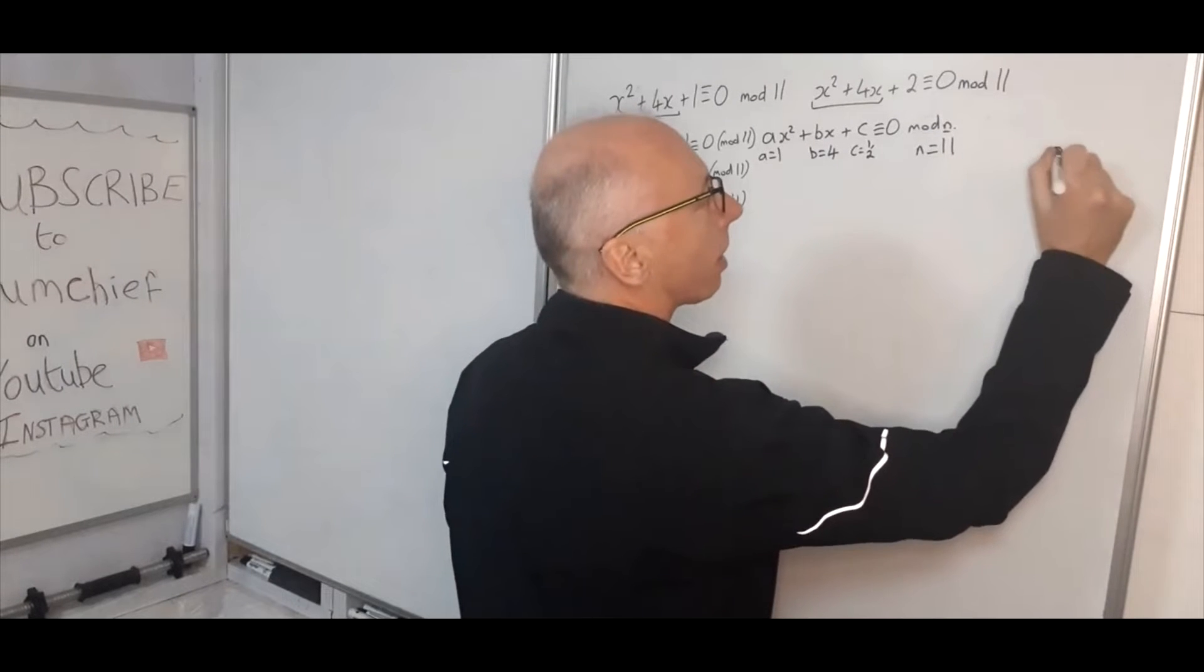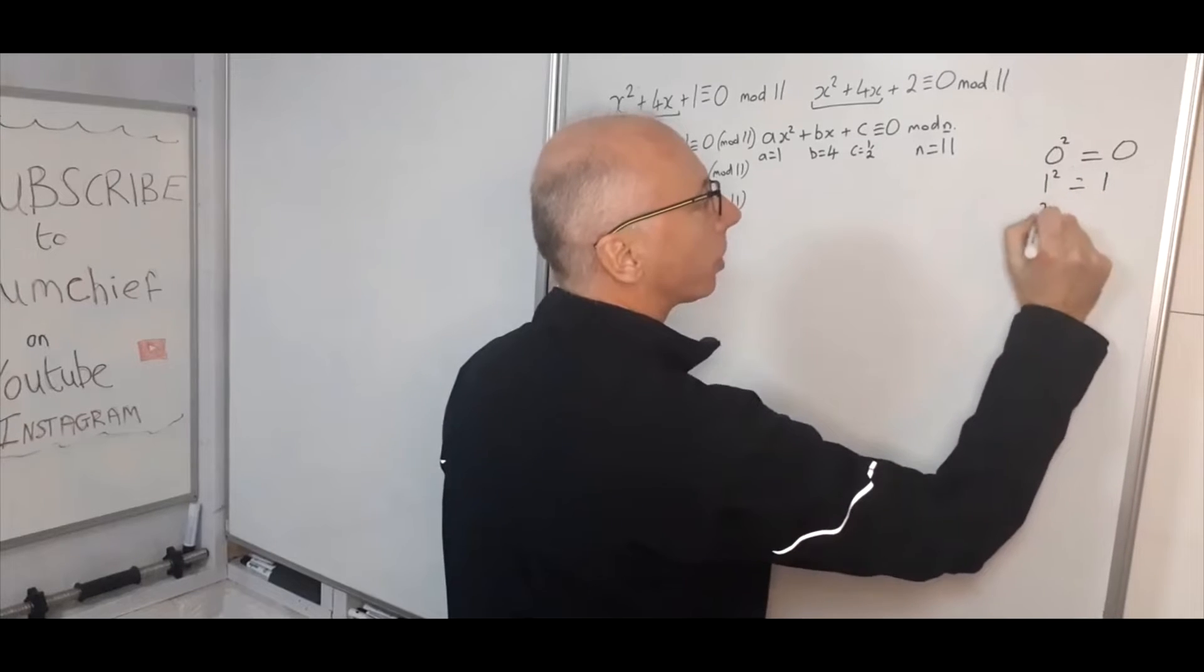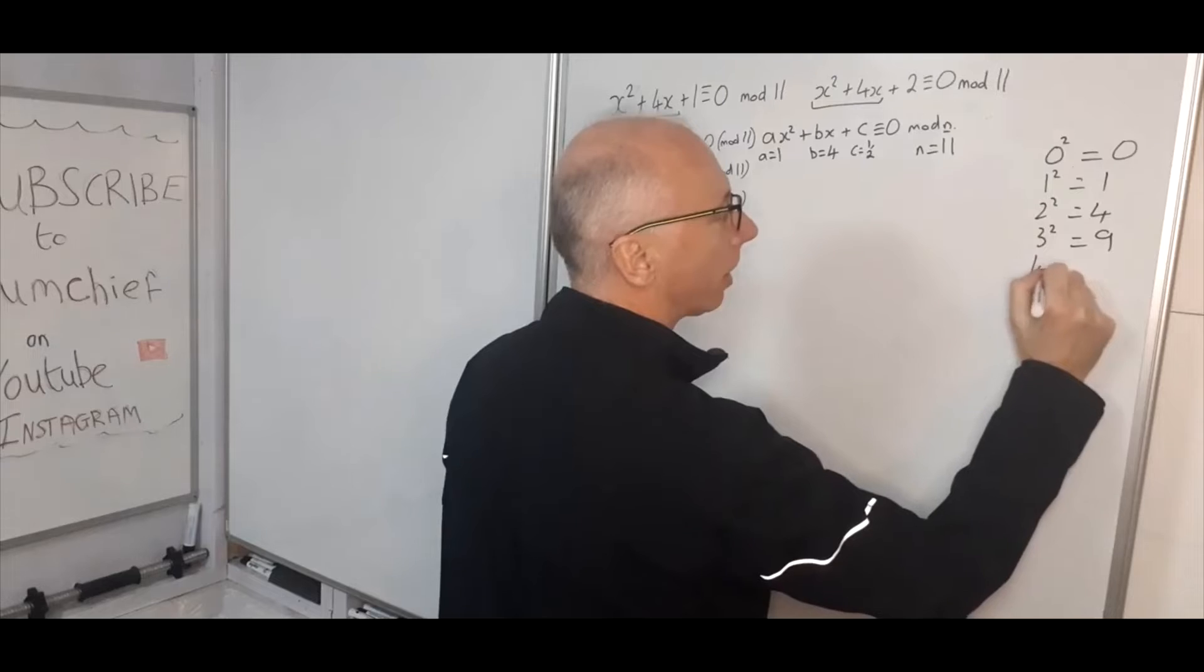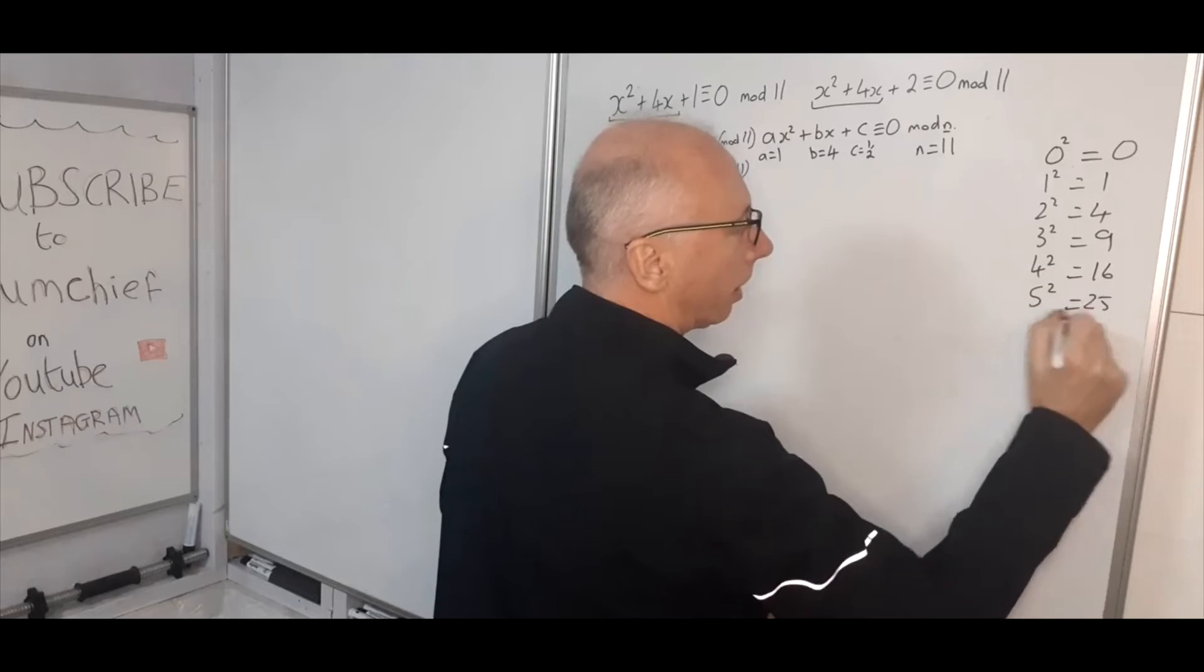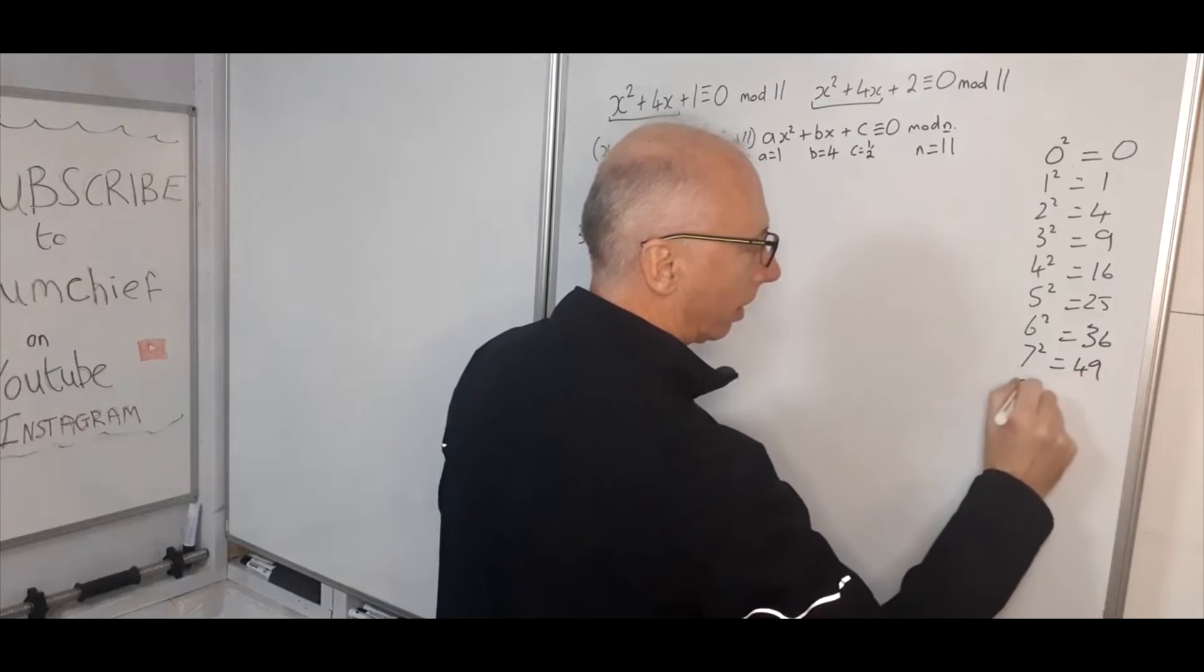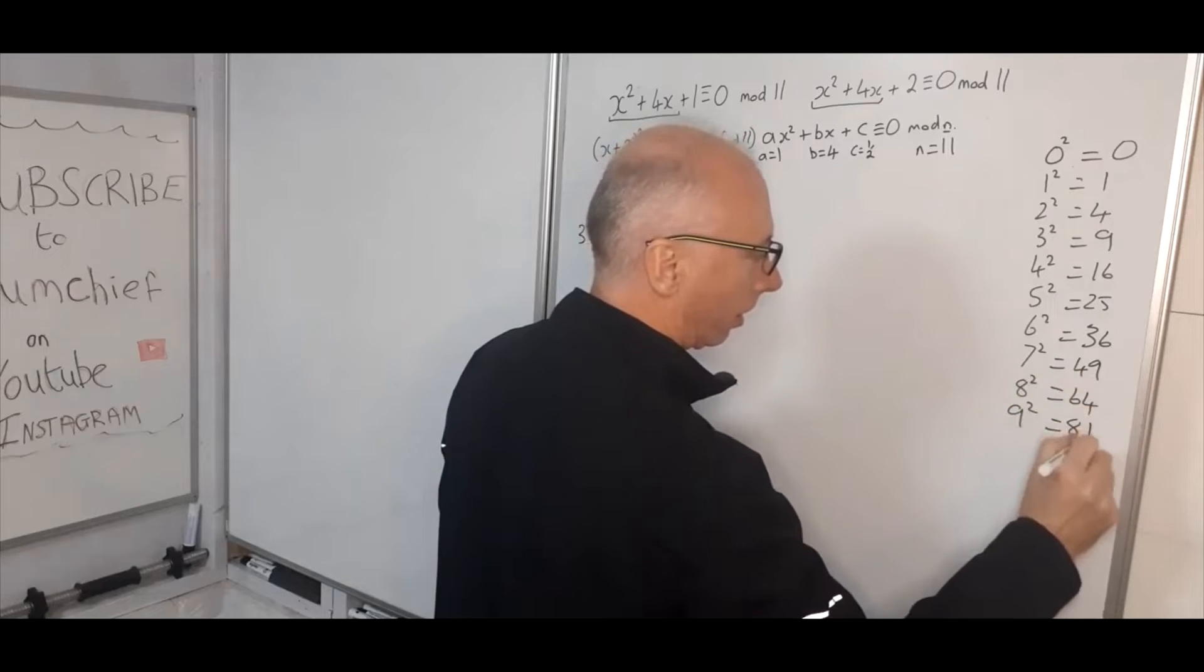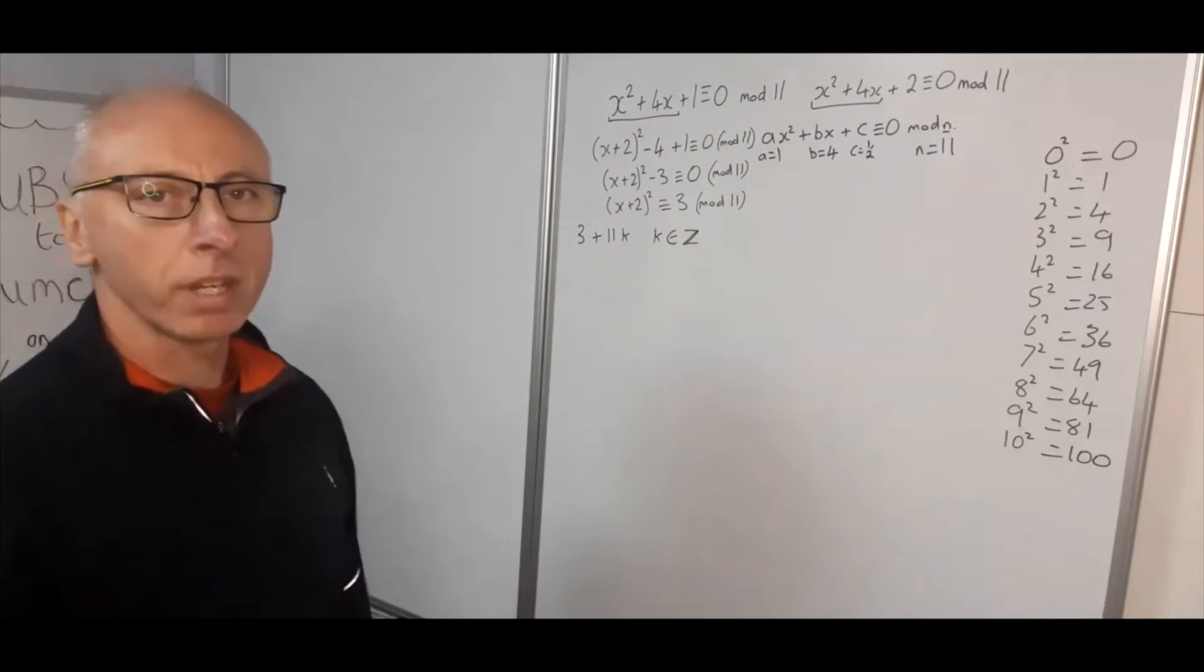So let's just write up here quickly now all the square numbers all the way up from 0 to 10. So 0 squared is 0, 1 squared is 1, 2 squared equals 4, 3 squared is 9. Okay, that's our square numbers from 0 to 10.